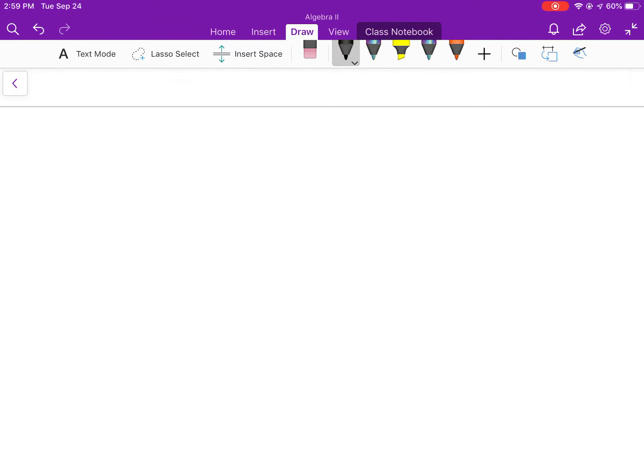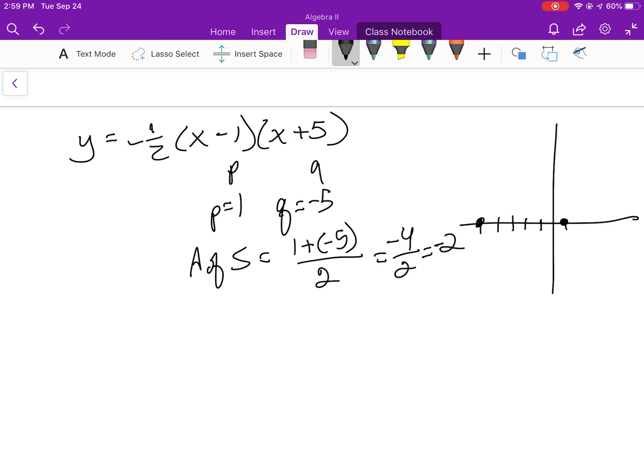In fact I'll add another one. So y equals negative 1 half x minus 1, x plus 5. So P and Q, P would be 1, Q is equal to negative 5. So there's one x intercept, and there would be a second x intercept. Find the axis of symmetry so 1 plus a negative 5 over 2, so negative 4 over 2, negative 2.